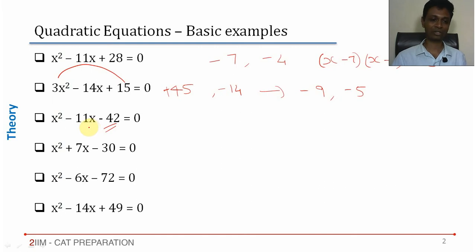This is -11. How do we get this? -14 and +3. -14 into +3 is -42.